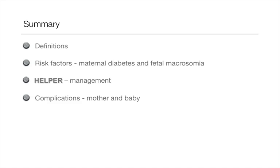In summary, this is a quick overview of shoulder dystocia. We've defined what it is, defined that maternal diabetes and fetal macrosomia are risk factors, went through the management which spells HELPER quite usefully, and noted that it is a significant risk to both the mother and the baby.